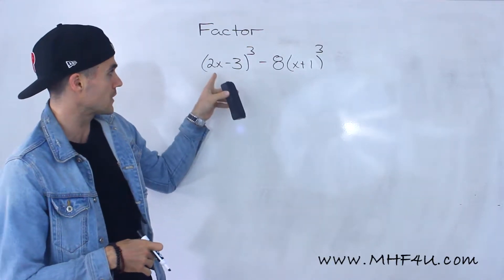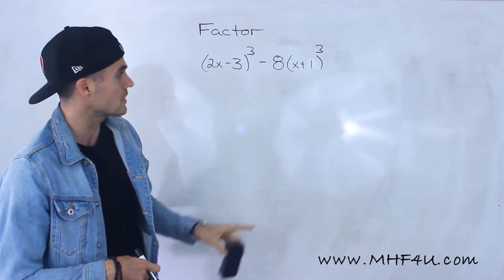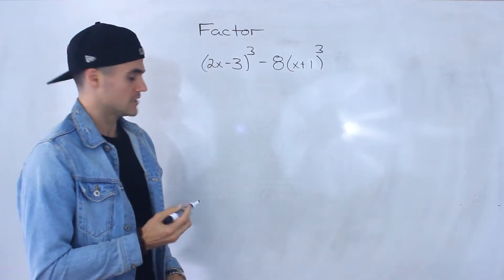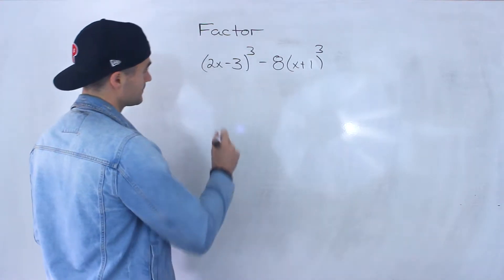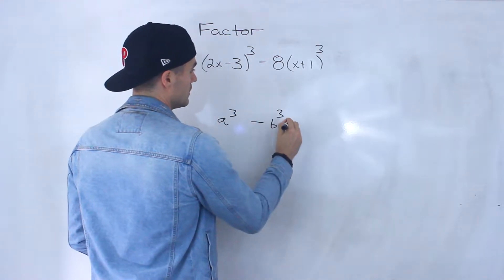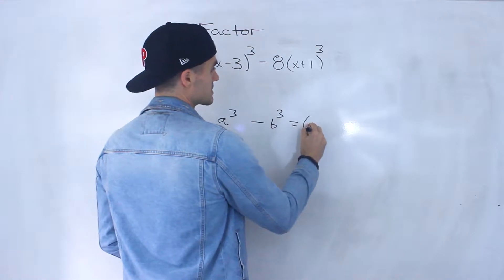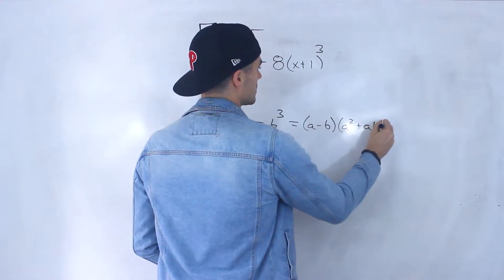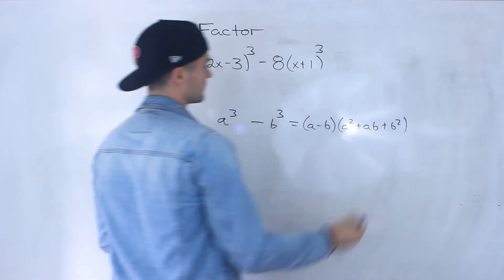So this is a difference of cubes here. We got (2x-3)³ minus 8(x+1)³. Notice that this is a difference of cubes, so we got a³ minus b³. And what's the formula for this? (a-b)(a² + ab + b²), like that.